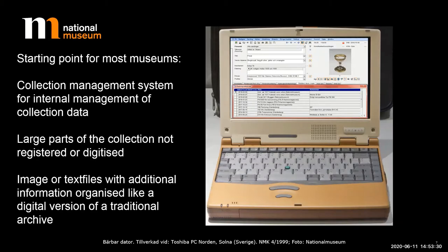Images and text files with additional information are often organized like a digital version of a traditional archive, meaning even internal staff need to know exactly where to look to find information. As I tend to say, if you look at a wonderful interface from the late 1980s, for most museum professionals with a digital profile, this is about as sexy as it gets. Researchers in digital humanities or linked open data or AI might think this is not their problem, but this is how most data around museum, library and archive collections is still captured. There is a lot of manual work involved, and only when this basic layer of information exists can we make use of the enormous possibilities that digital technology offers.